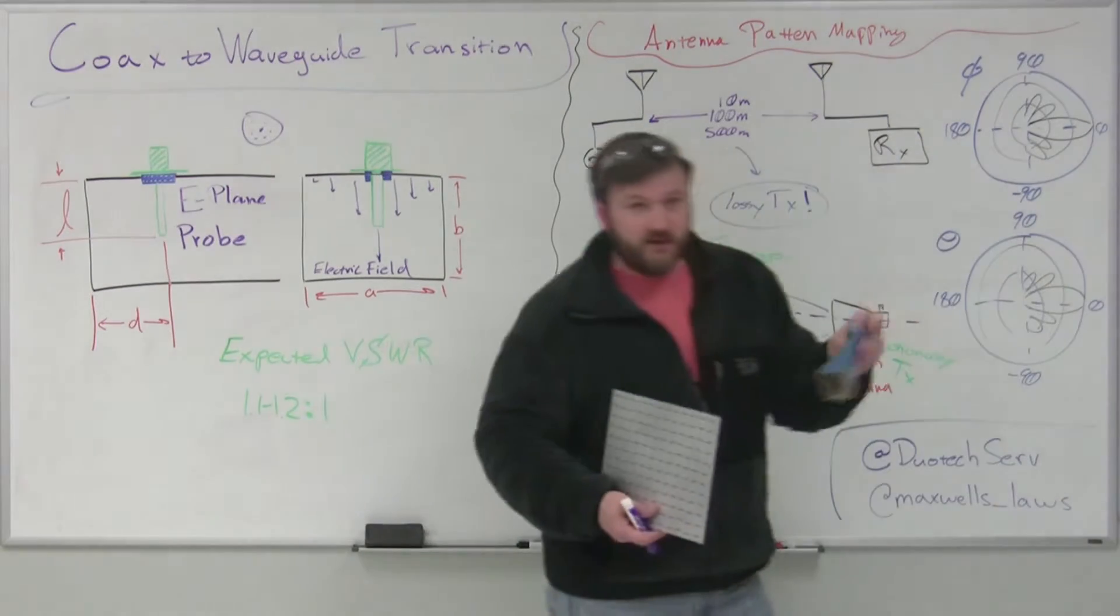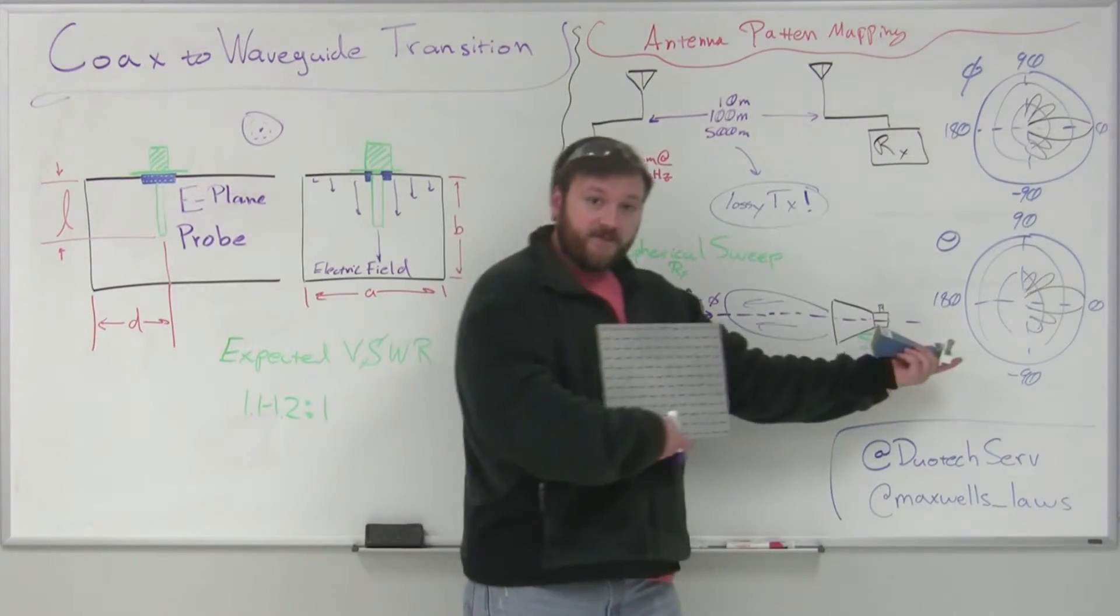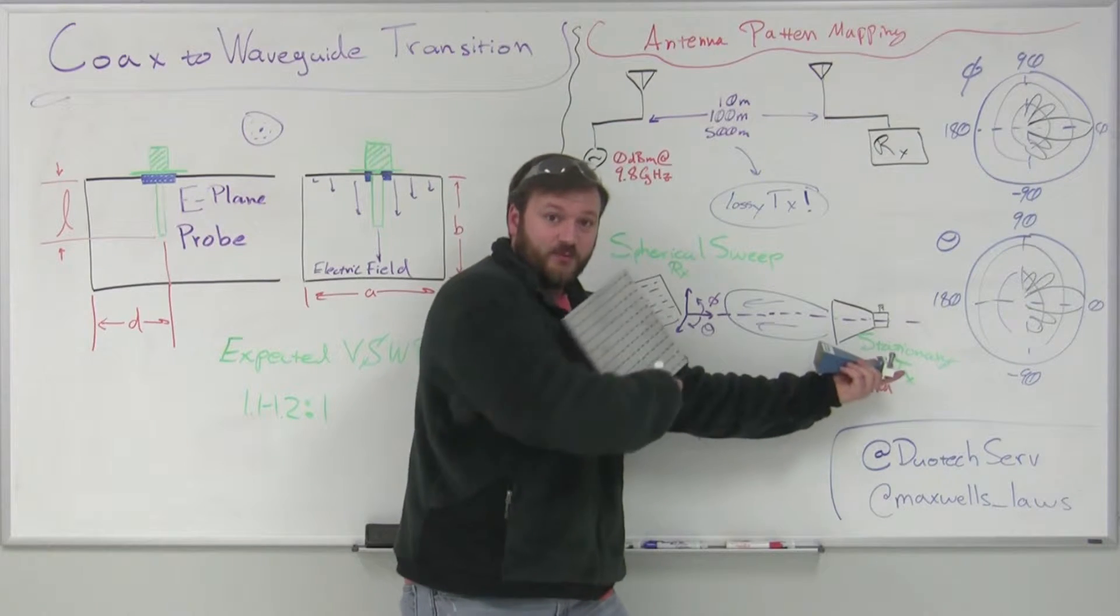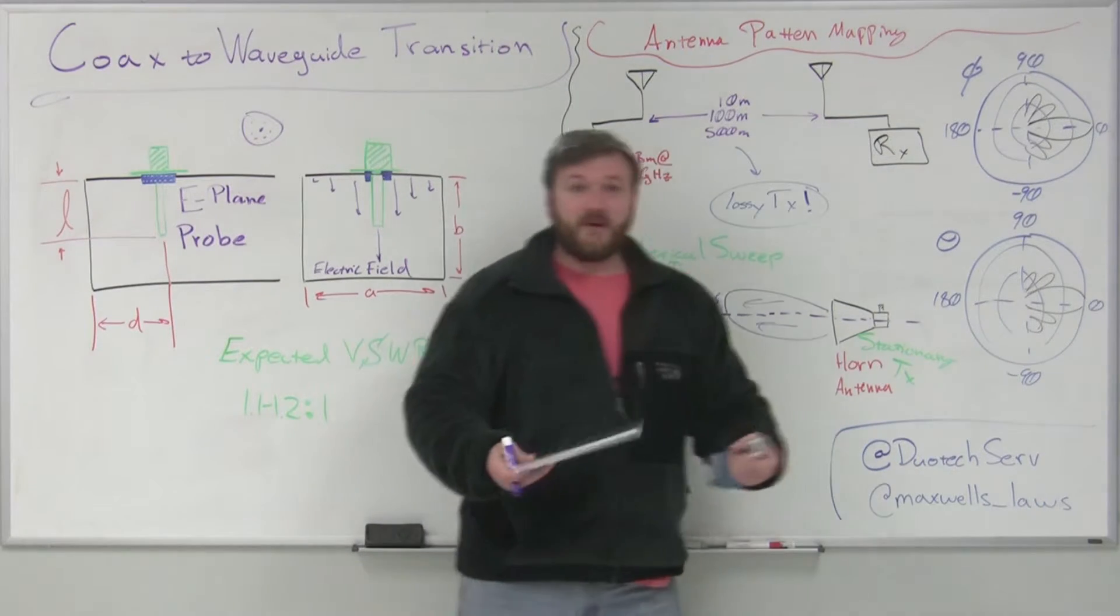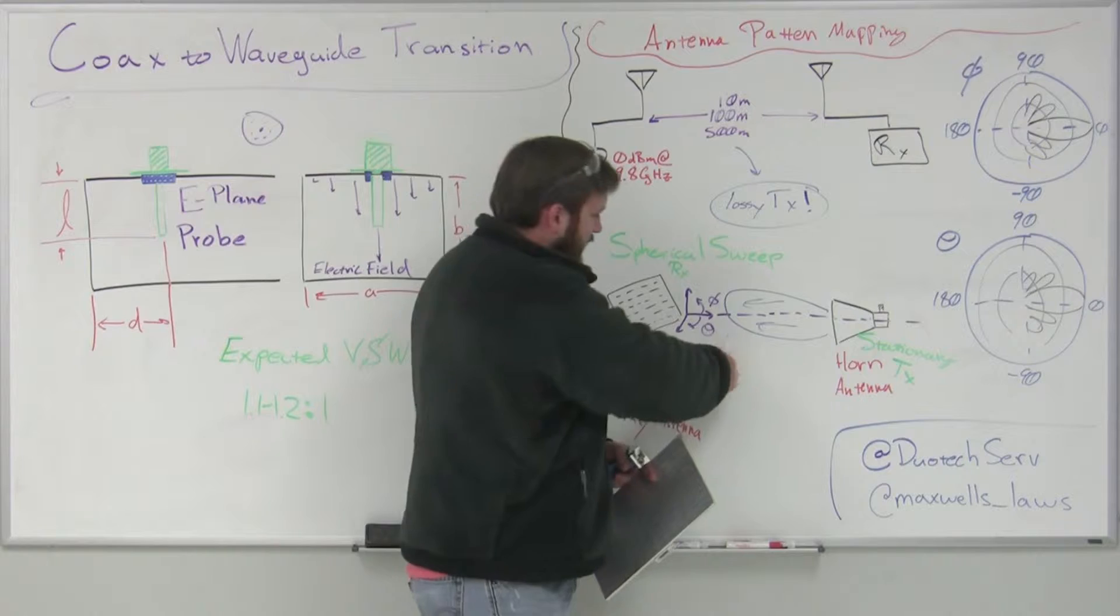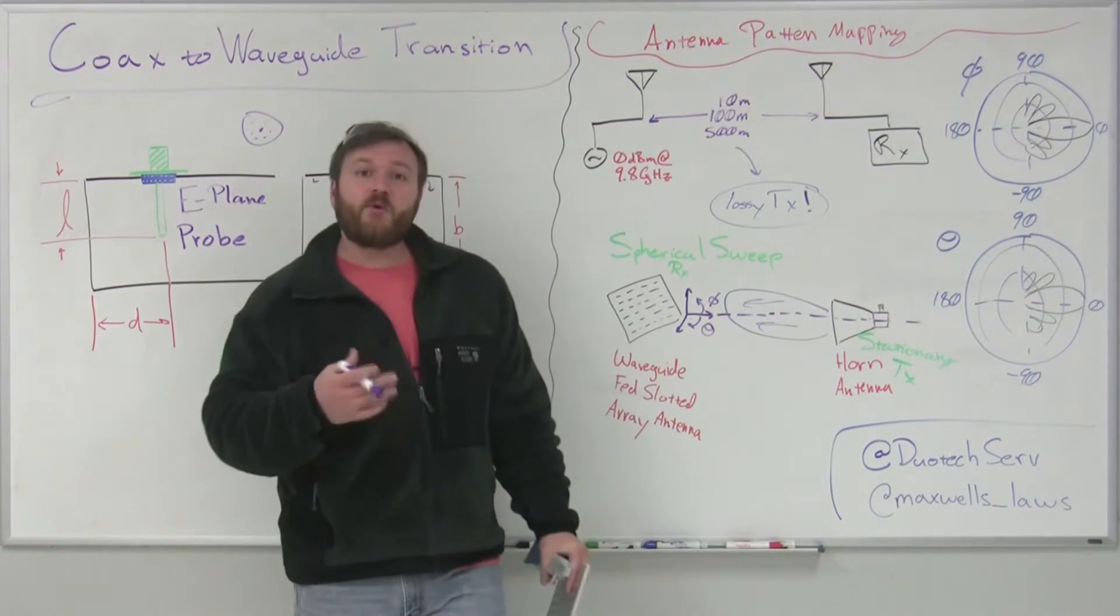Horn antenna, standard gain horn, is what I'm using. So this will be my far side, this will be my near side, and this will move as such. So I'm going to move in my theta and my phi direction, and I will map that out.